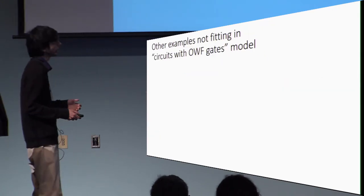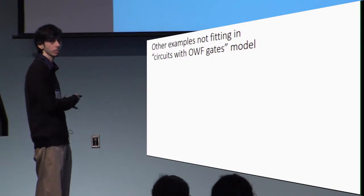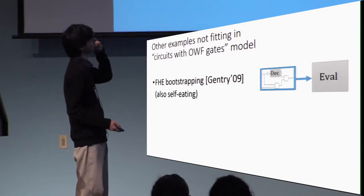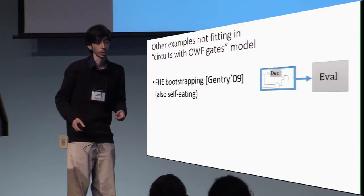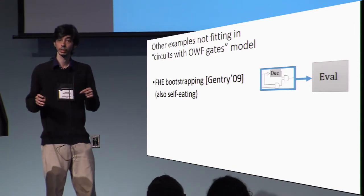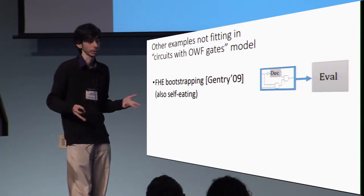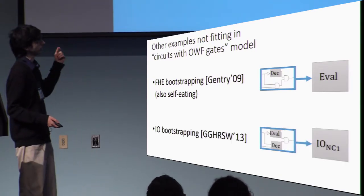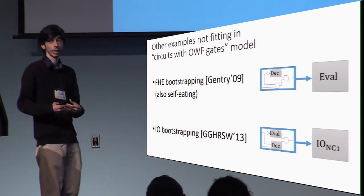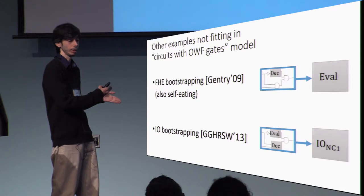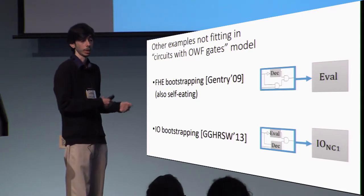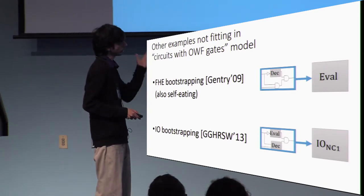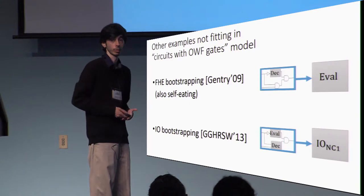This self-eating behavior is not uncommon. There are other examples that do not fall under the circuits-with-one-way-function-gates model. One famous example is FHE bootstrapping by Gentry, where we feed the decryption algorithm back to the evaluation algorithm. Another is I.O. bootstrapping due to Garg et al. in 2013, where to get I.O. for poly-sized circuits, you feed the evaluation and decryption of FHE back to some I.O. for a smaller class of circuits. These also do not fall under the circuits-with-one-way-function-gates model.